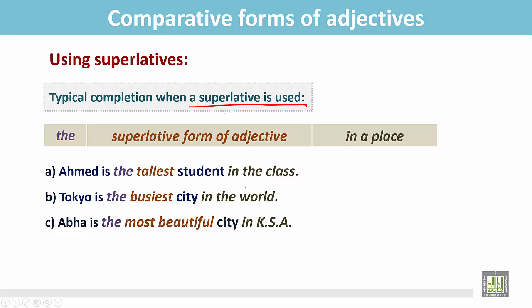Abha is the most beautiful city in KSA. There are many other beautiful cities in KSA, but Abha is the most beautiful. Here the adjective is a long adjective, and before it we use the superlative form this way: 'the most.'